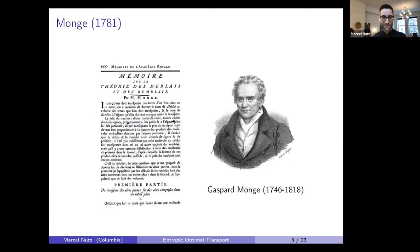Since this is a conference about some historical treaties, I felt compelled to start with another historical treatise. This one is exactly 240 years old — it's due to Monge. It's often seen as the beginning of linear programming and optimal transport, and if you can read the fine print, it's about moving earth from one location to the other.